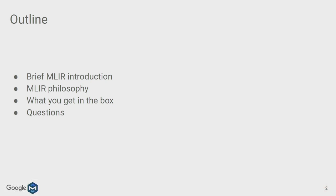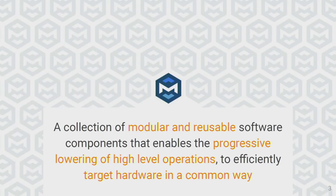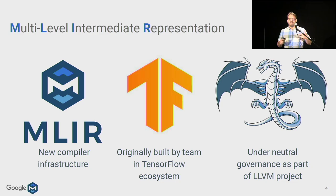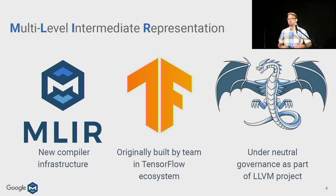MLIR is a collection of modular and reusable software components that enable the progressive lowering of high-level operations to efficiently target hardware in a common way. It's a new compiler infrastructure originally built by a team in the TensorFlow ecosystem, but now under neutral governance as part of the LLVM project — an open community with collaboration between multiple different companies, universities, academia, and research labs.